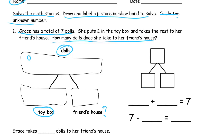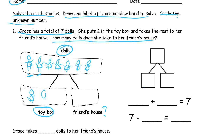Seven dolls. And since Grace is a girl, I'm going to give her all girl dolls. You don't have to even draw dolls for your picture — you can draw circles or X's, as long as you get pictures you can count. These are math pictures, not art pictures. So we draw seven dolls: one, two, three, four, five, six, seven. Two go in the toy box — we'll make it these two right here. And the rest go to her friend's house: one, two, three, four, five. That's the rest of them — five more.